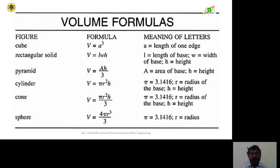For a rectangular solid, the suitable formula is V equal to L times W times H, where L equals the length of the base, W equals the width of the base, and small h equals the height. Then for a pyramid, the volume formula is V equal to capital A times small h divided by 3.